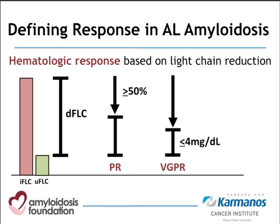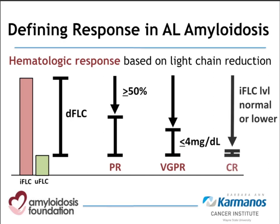Some labs report in milligrams per liter, so the difference would be 40 mg/L rather than 4 mg/dL — those are the same, just different units — and we call this a VGPR or very good partial response. To say somebody's had a complete hematologic response, we want to see the involved free light chain get to normal levels or lower. We don't require the number to be zero; if both are in the normal range or lower, we call that a complete response.